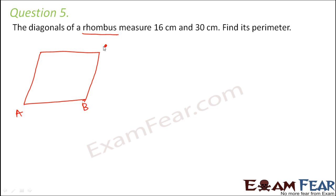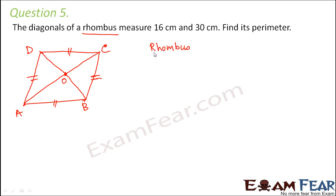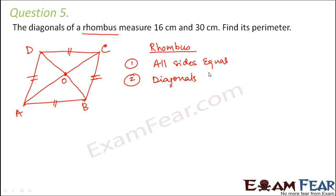Let us name the rhombus as A, B, C, D such that AD equals AB equals BC equals CD — all sides are equal. Now the diagonals of the rhombus are given, and the diagonals bisect each other at point O. As per the properties of a rhombus: first, all sides are equal; second, the diagonals bisect each other at 90 degrees, meaning the diagonals are perpendicular to each other. So this is 90 degrees at each corner.